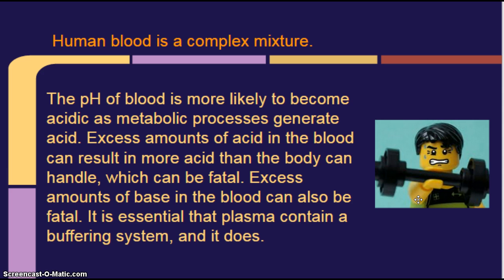Okay? So when your body is doing what it needs to do to live and to allow you to exercise and allow you to move and think and do everything else you need to do, well, that can produce acid. Excess amounts of acid in the blood can result in more acid than the body can handle, which can be fatal. Excess amounts of base in the blood can also be fatal. It is essential that plasma contain a buffering system. And it does.